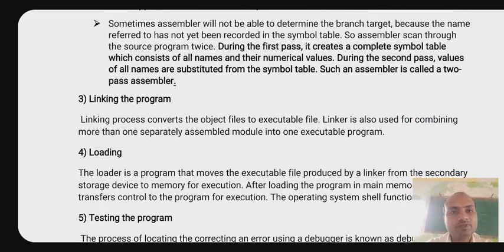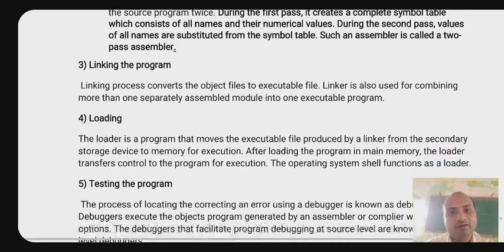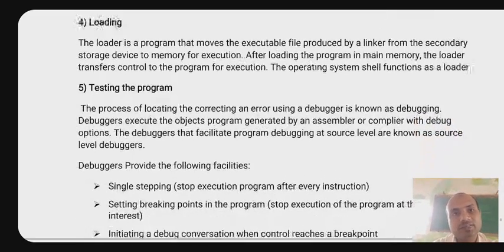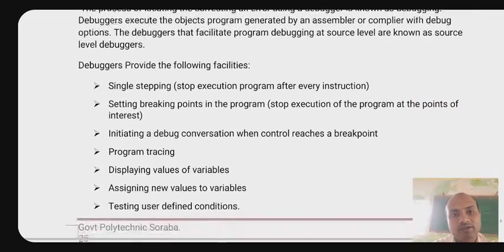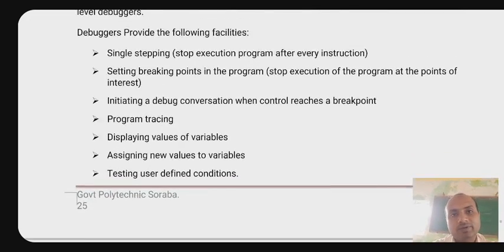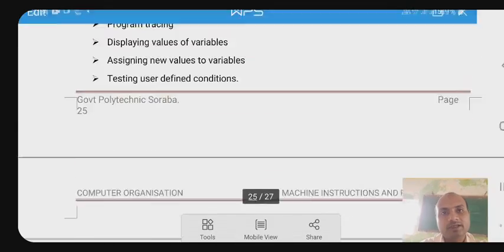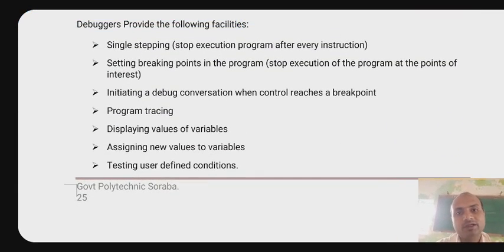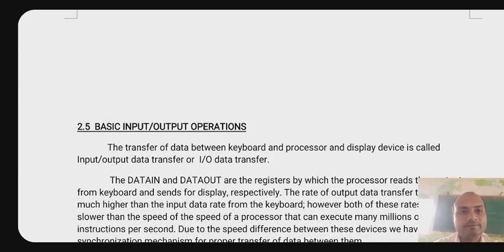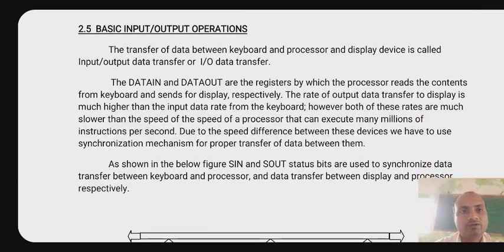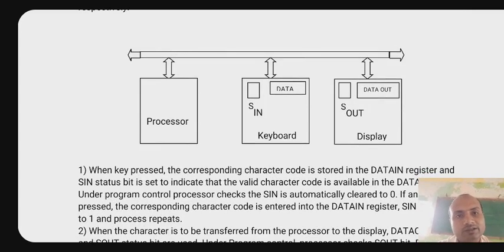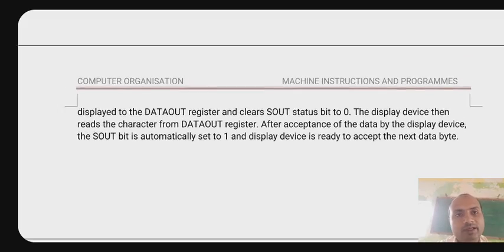Linking the program converts object files into an executable file. The loader is a program that moves the executable file from secondary memory into main memory for execution. Testing and debugging methods include single stepping, setting breakpoints, tracing, displaying values of variables, assigning new values to variables, and basic input/output operations such as data in and data out.